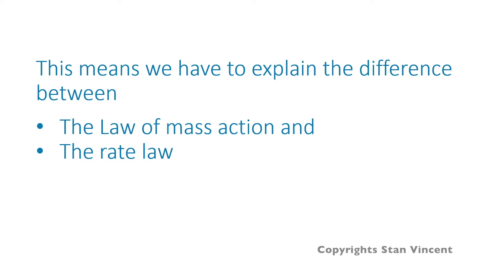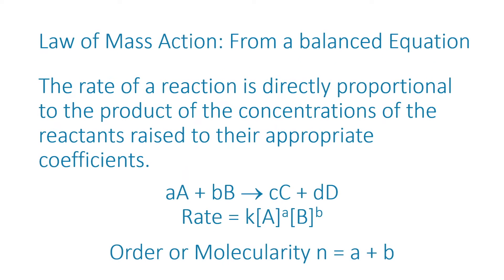We have to differentiate between the law of mass action and the rate law. The law of mass action can be written from a balanced equation. The rate of a reaction is directly proportional to the product of the concentrations of the reactants raised to their appropriate coefficients. For the reaction between A and B producing C and D, where lowercase a and b are the coefficients of A and B, the rate equals k times concentration of A raised to coefficient a, times concentration of B raised to coefficient b.